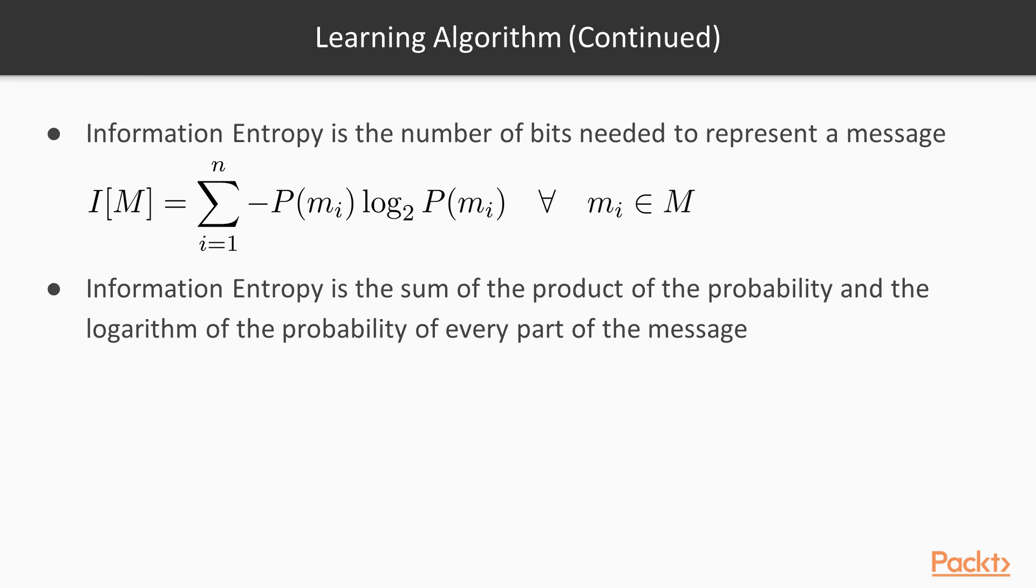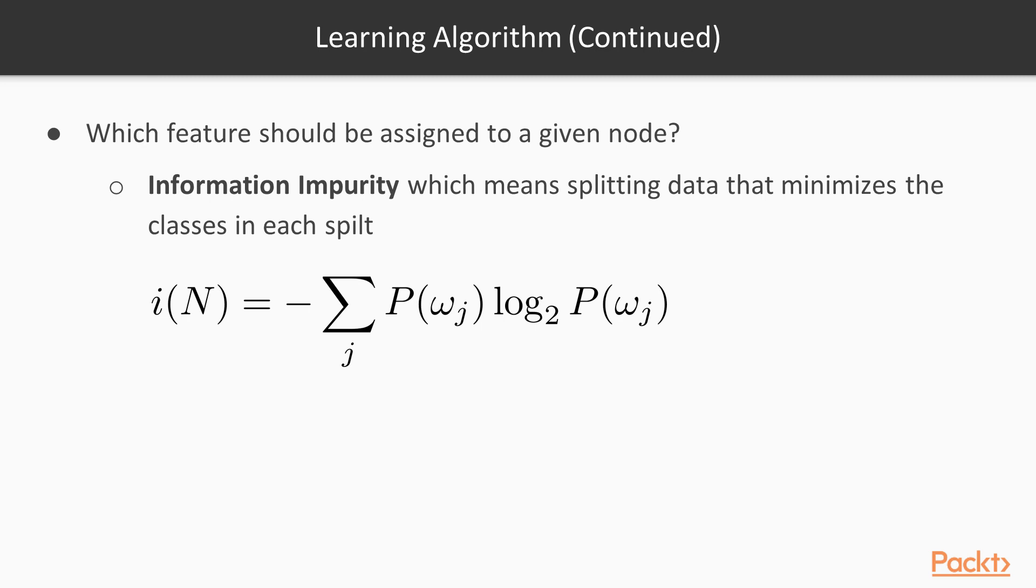So back to our goal, at a given node we want to choose the feature that holds more information, or in other words, that best clusters the data set. In order to achieve this, we introduce the concept of information impurity, which simply means splitting the data in a way that minimizes the classes in each split. So we choose the feature that yields more samples belonging to the same class in each branch.